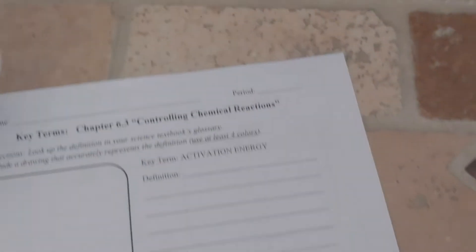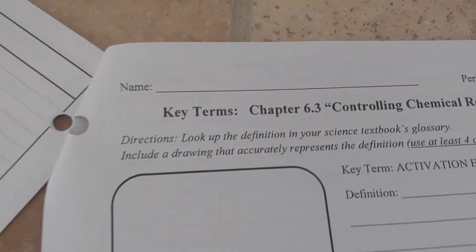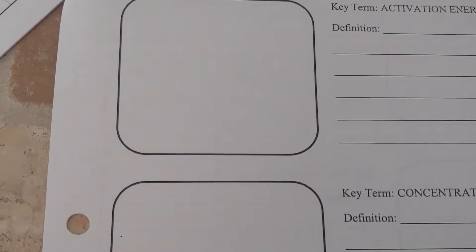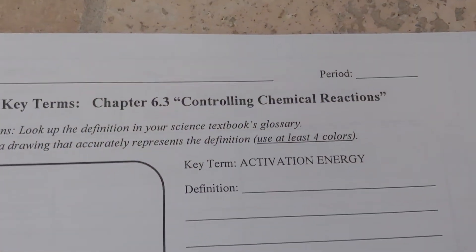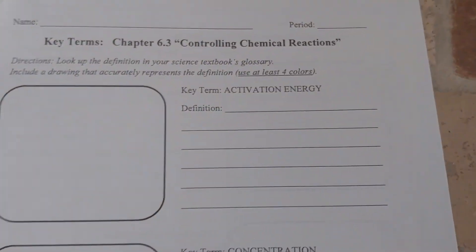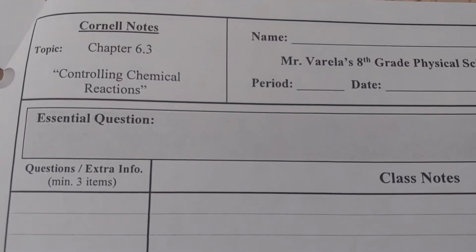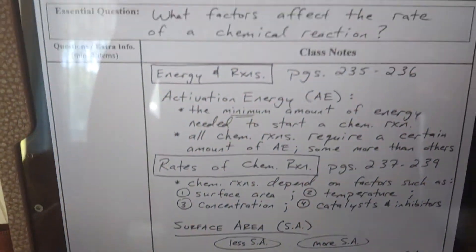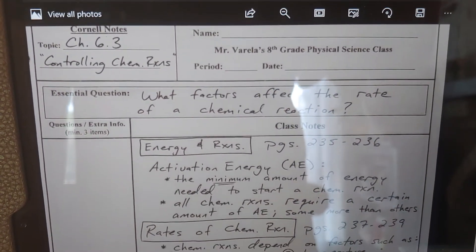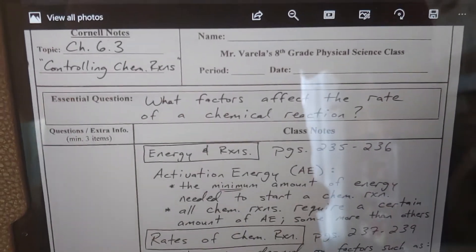This is for periods 4 and 5. You will need your Chapter 6 classwork packet, the one that says 8th grade. Before we begin, you should have already done Chapter 6.3 key terms — do a drawing in each box with at least four colors, and look up the definition on the back of the book. There are five key terms total, so one box will be blank. Once you're done with that, you're ready for these notes.